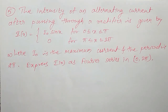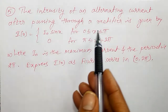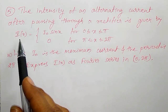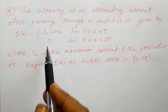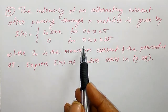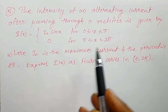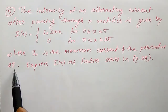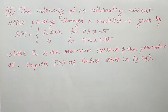One important application-type example I am going to solve: the intensity of an alternating current after passing through a rectifier is given by I(x) = I₀ sin x for 0 ≤ x ≤ π, and 0 for π ≤ x ≤ 2π, where I₀ is the maximum current (a constant) and the period is 2π. Express I as a Fourier series on 0 to 2π.